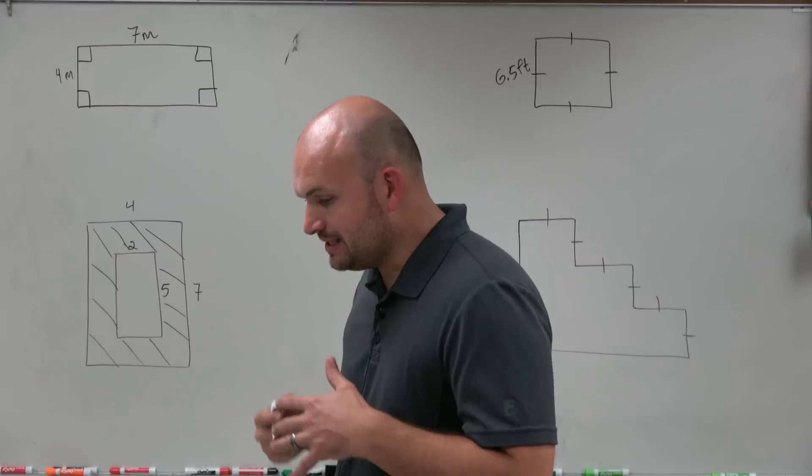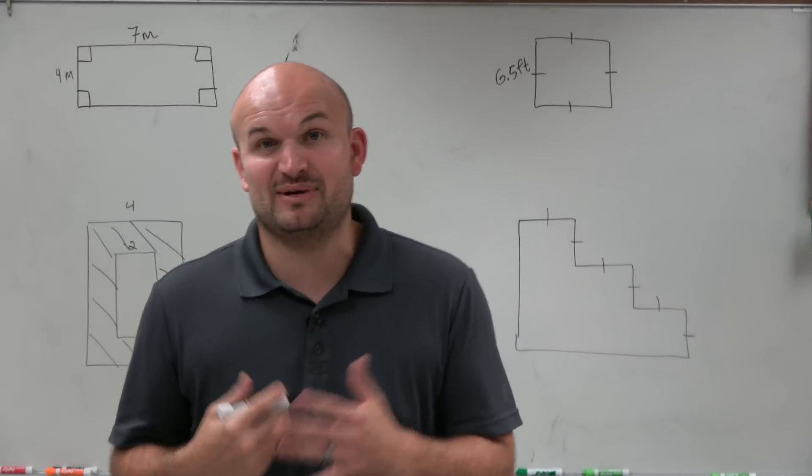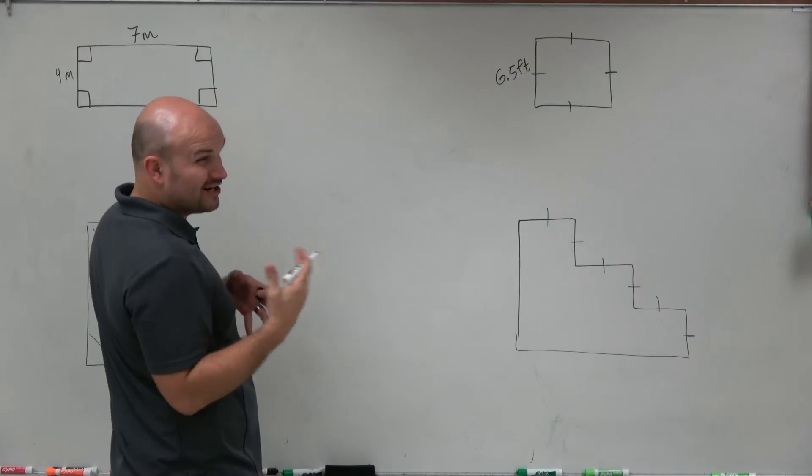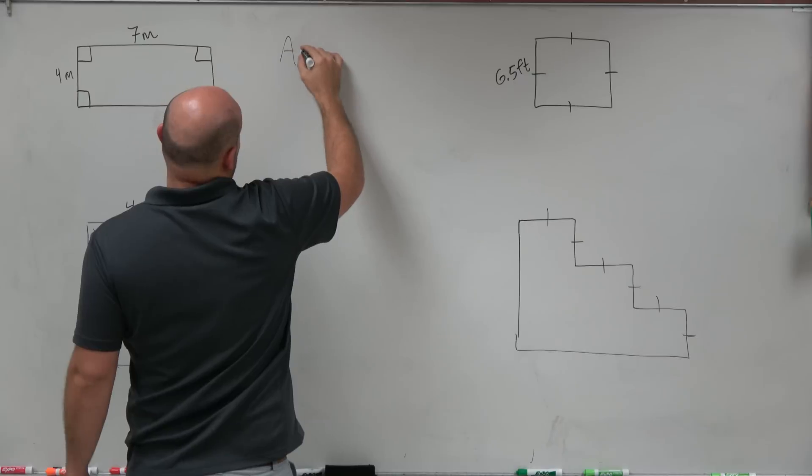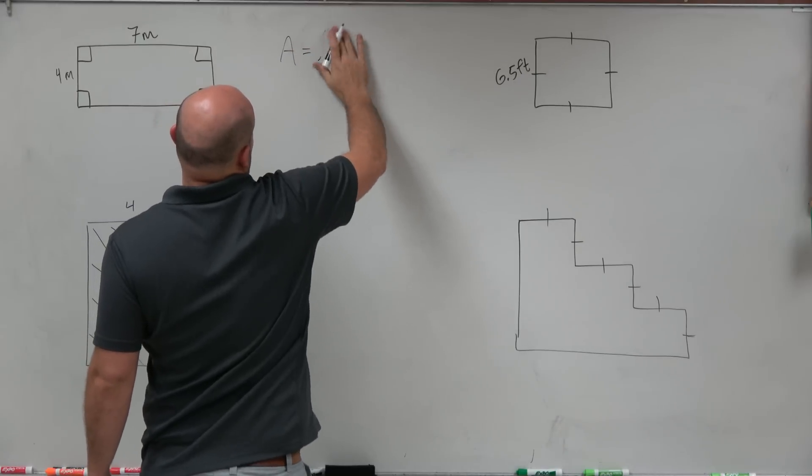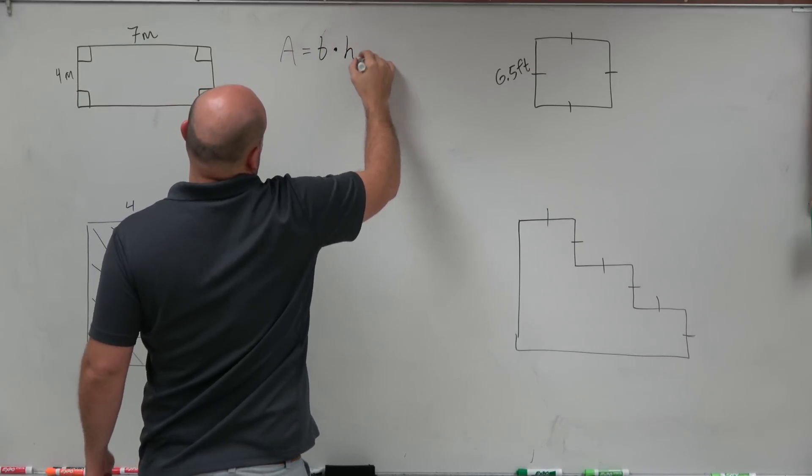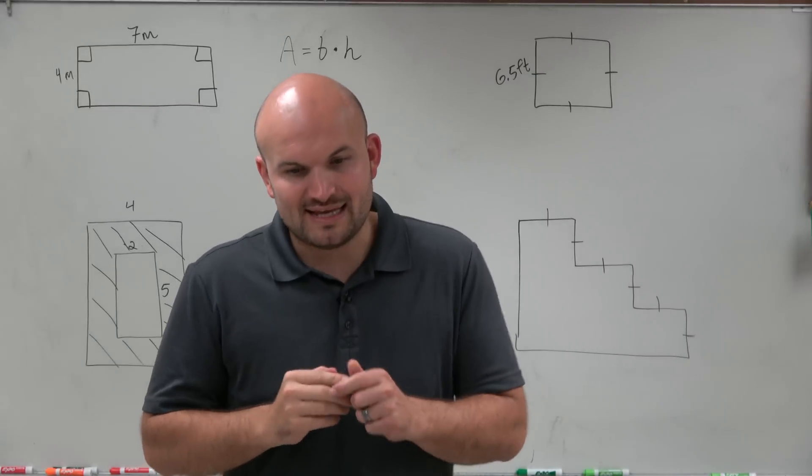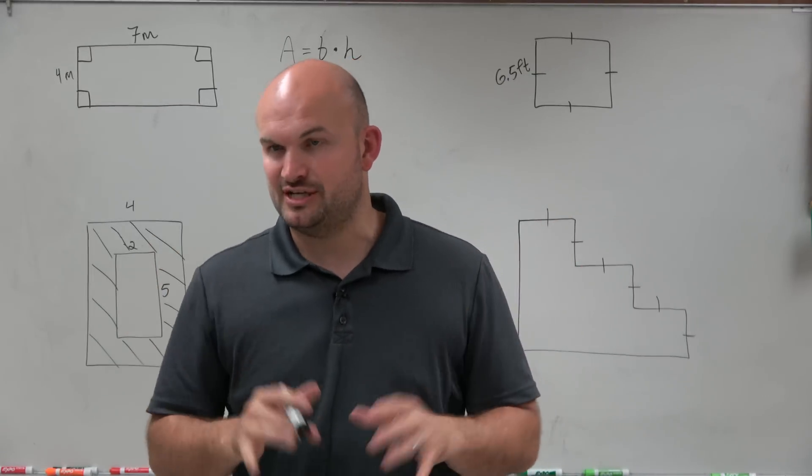To start off, when we find the area of a rectangle we need to know the formula. You might be familiar with area equals length times width. In this case we're going to use area equals base times height. The reason we're changing it from length and width to base times height is that length and width, it really doesn't matter what the orientation is.